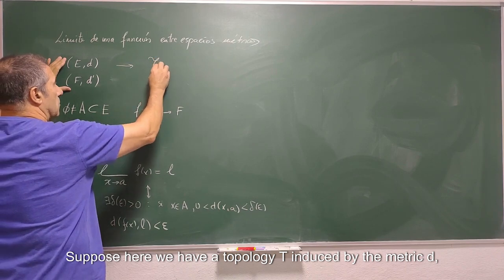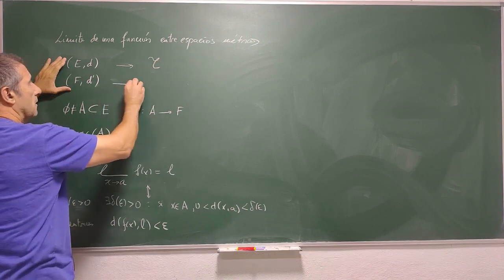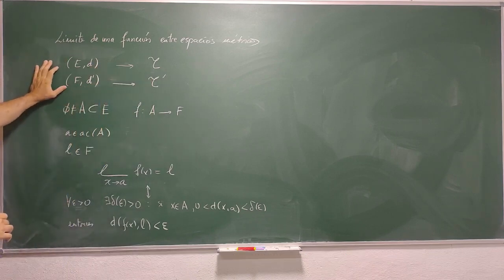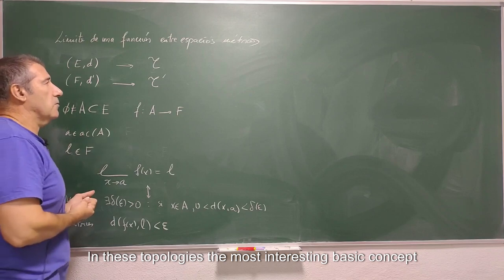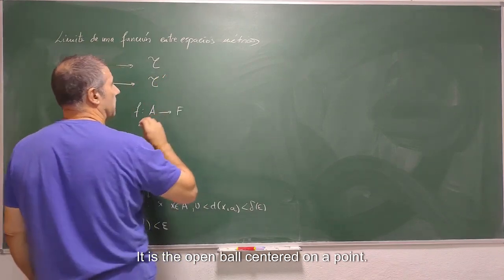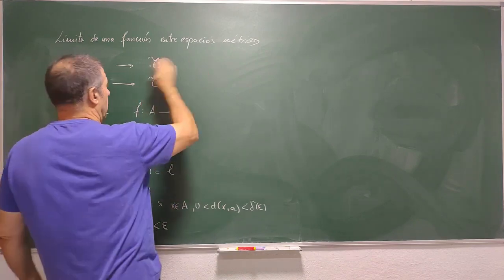Suppose here we have a topology T induced by the metric D and here another T prime induced by the D prime metric. In these topologies, the most interesting basic concept is the open ball centered on a point.